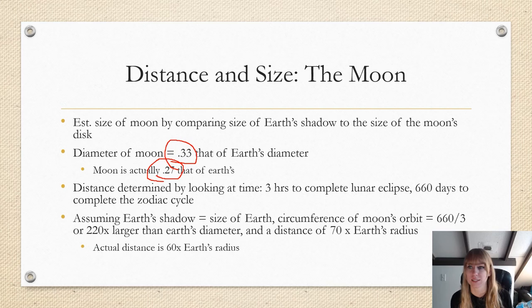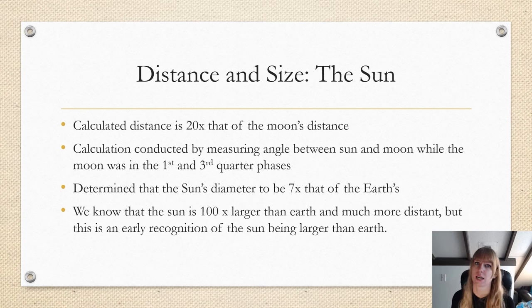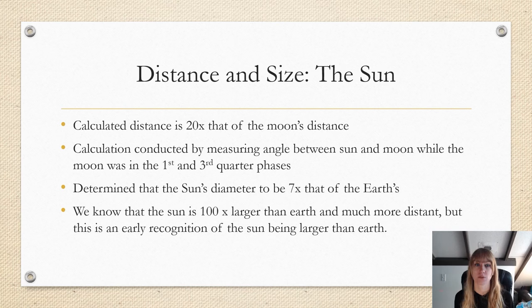He was additionally able to calculate the distance of the sun at 20 times farther than the moon was from the Earth, and he calculated this by measuring the angle between the sun and the moon when the moon was at the first and third quarter stages. From the apparent size in the sky of the sun and the moon and relative distance, along with his predetermined diameter of the moon, he deduced that the sun's diameter would be seven times that of Earth. So this was a bit off. It's actually about 100 times larger than Earth and much more distant. But Aristarchus's work shows us an early recognition the sun is actually larger than the Earth, and then it may have influenced the view of a heliocentric solar system, which is pretty neat.